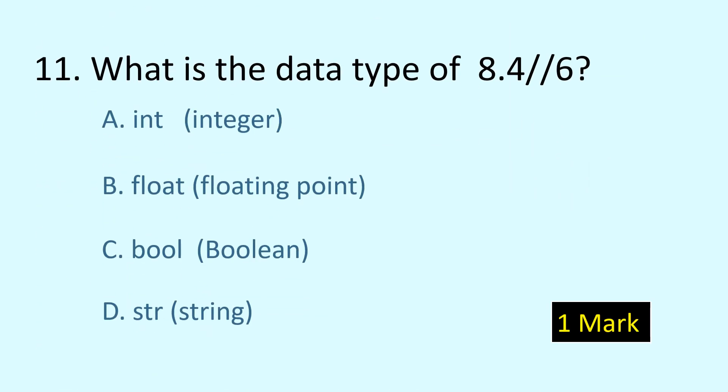Question number 11: what is the data type of 8.4 floor division 6? The options are int, float, bool, or string, and the answer is float. Remember that if an arithmetic expression involves any operand of float type, then the result is also of float type.